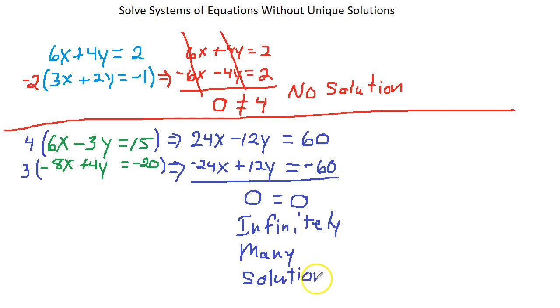Alright. Now, you see the difference. When all the variables cancel and you're left with something false, no solution. When all the variables cancel and you're left with something true, infinitely many solutions. Those are systems of equations without unique solutions. Now you can identify them.